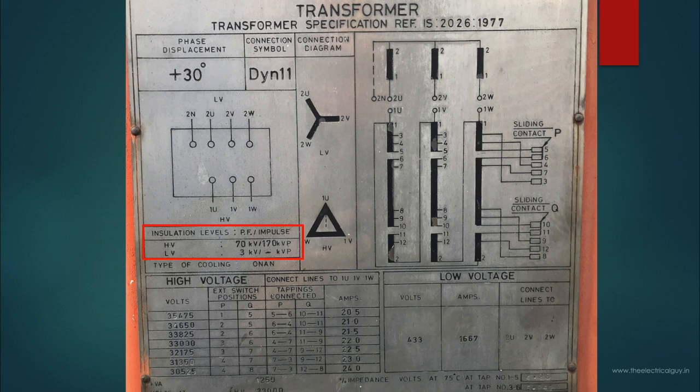Moving on here you can see the insulation levels. This is power frequency voltage and impulse withstand voltage. The first value 70kV and 3kV indicates the power frequency voltage for high voltage winding and low voltage winding respectively. Similarly the 170kV peak indicates the lightning impulse voltage for high voltage winding. For LV winding it is not applicable.